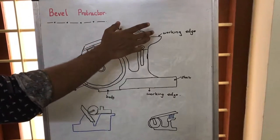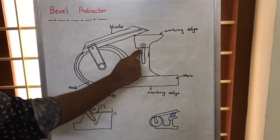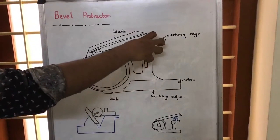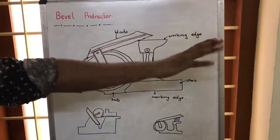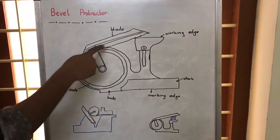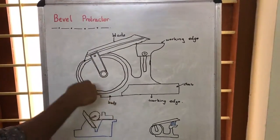This is the blade, and this working edge is connected to the main structure by using a locking nut. That means if we dismantle this locking nut, we can take this out. The blade is also connected to the structure by using a locking nut, and this is the scale.